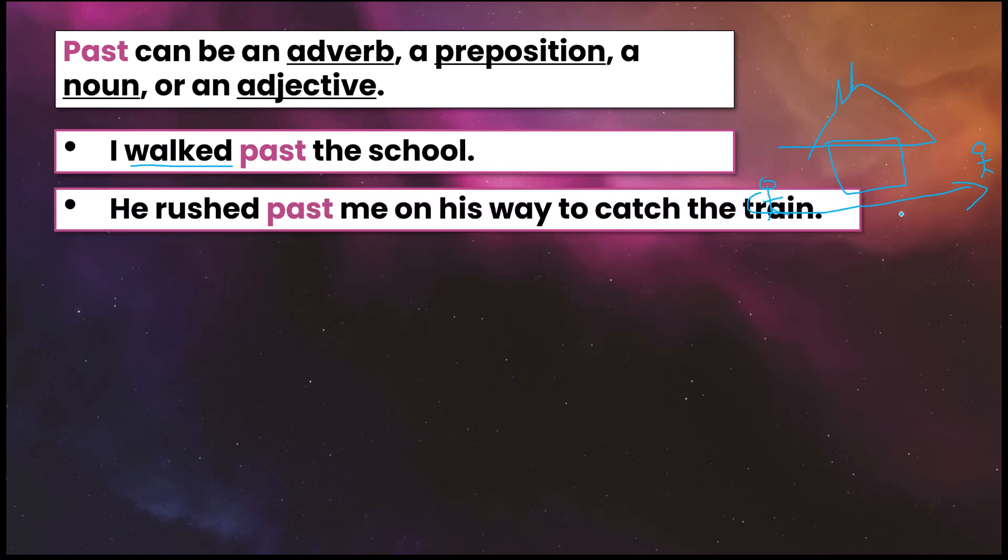Look at another example. He rushed past me on his way to catch the train. So again, I'm here and here's another guy and he rushed past me. So the verb here is rushed, it's not past.